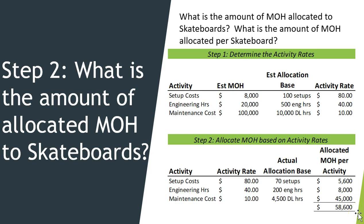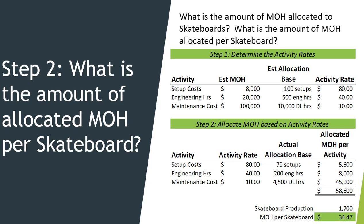I end up with $58,600 of total overhead allocated to skateboards. If the question asks how much is allocated per skateboard, I look at my skateboard production of 1700 units and divide the total overhead by the 1700 units, which gives an overhead rate per skateboard of $34.47.